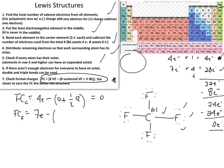Looking at the circled fluorine: it has two, four, six unshared valence electrons — so we enter six. Fluorine also has a single bond connected to carbon, which contains two bonding electrons. Half of those two bonding electrons is one.